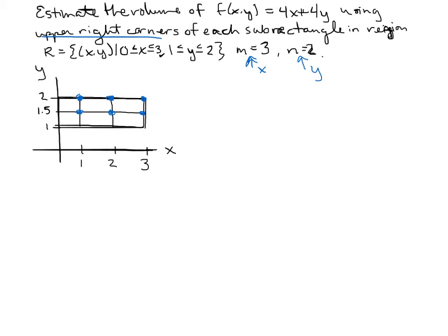All right, so the points that we have for the upper right corners: we've got (1, 1.5), we've got (1, 2).